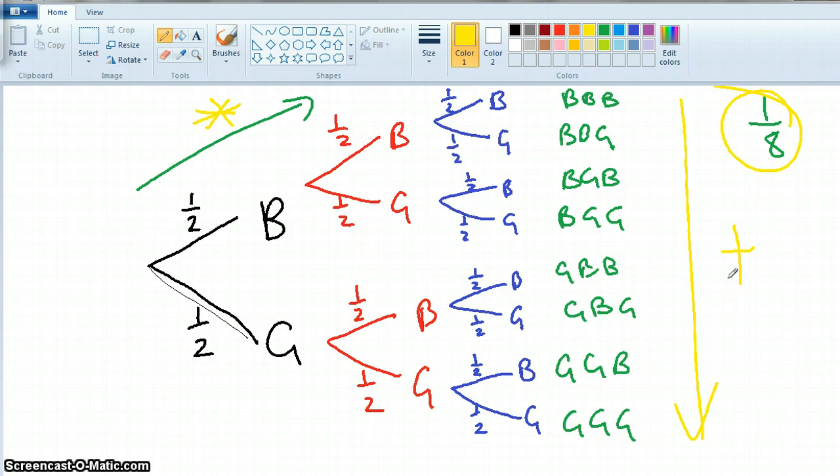Exactly two girls. Exactly two girls. Okay, so we've got three-eighths - we added those up.